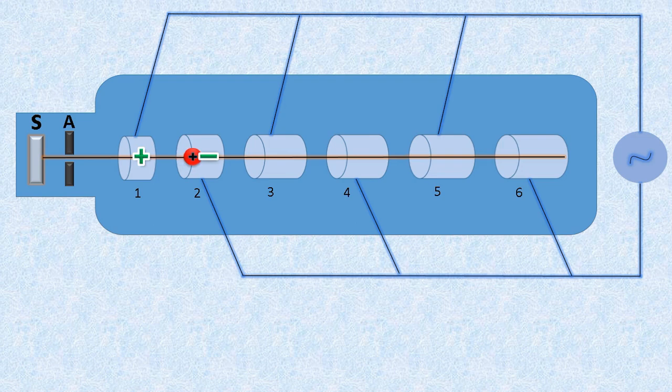In the gap between the cylinders, on entering the cylinder 2, the particle moves inside it with constant velocity.